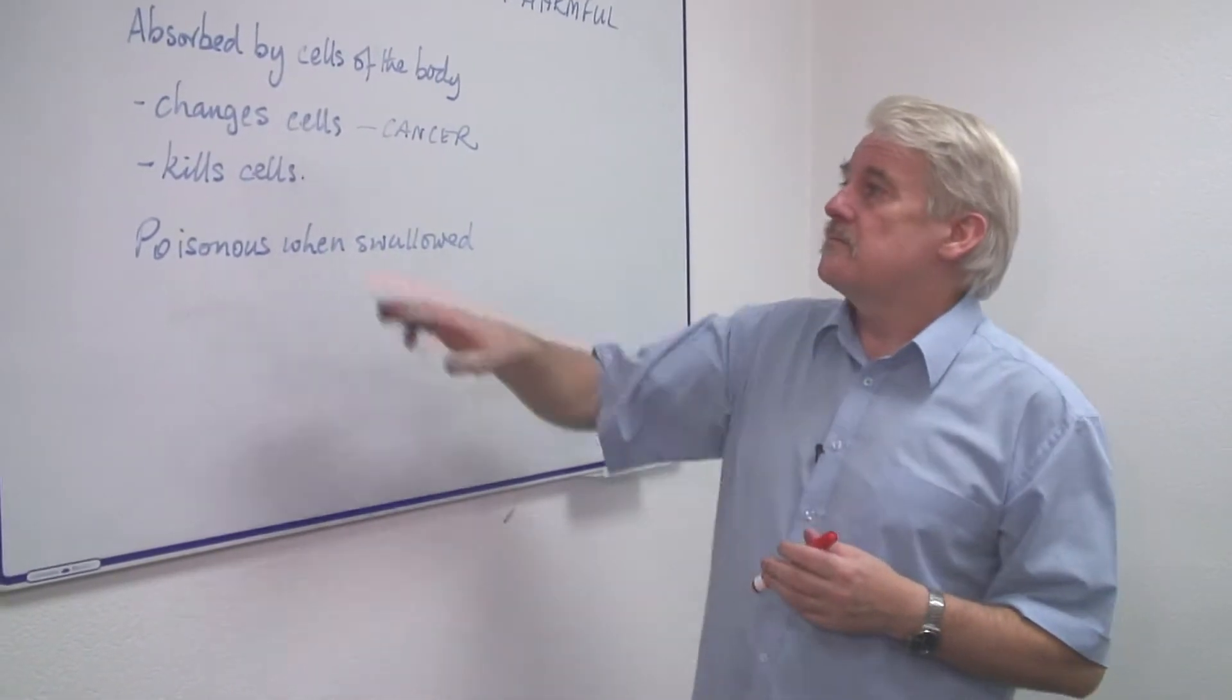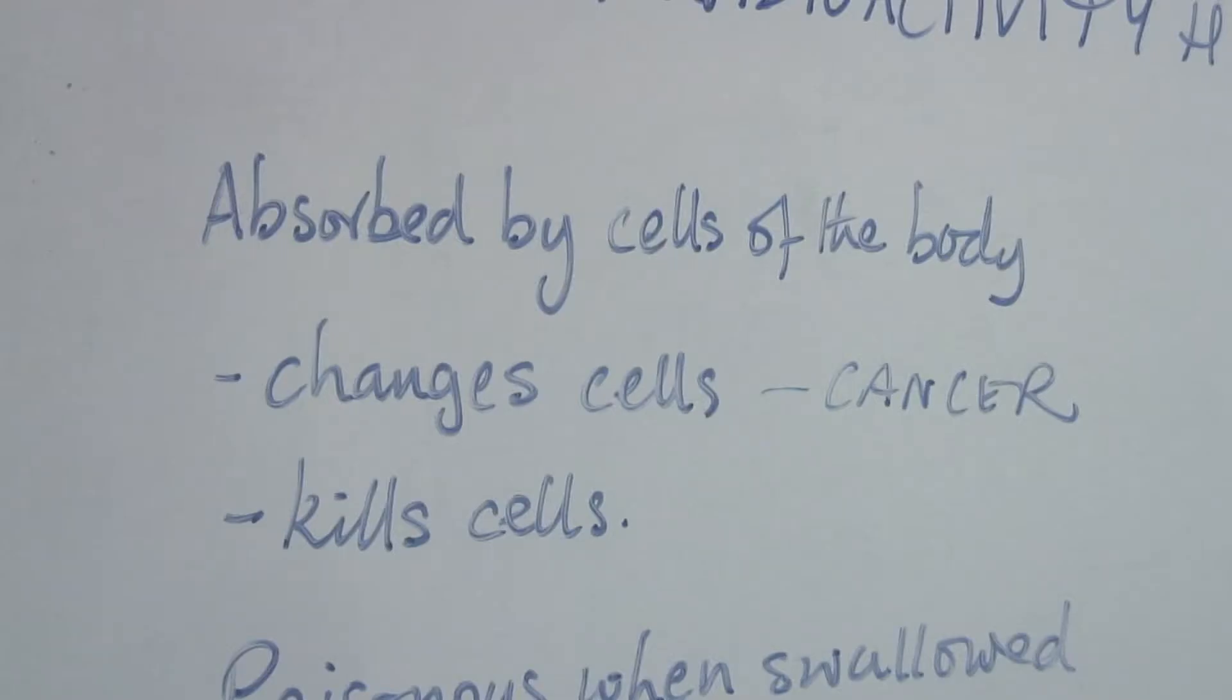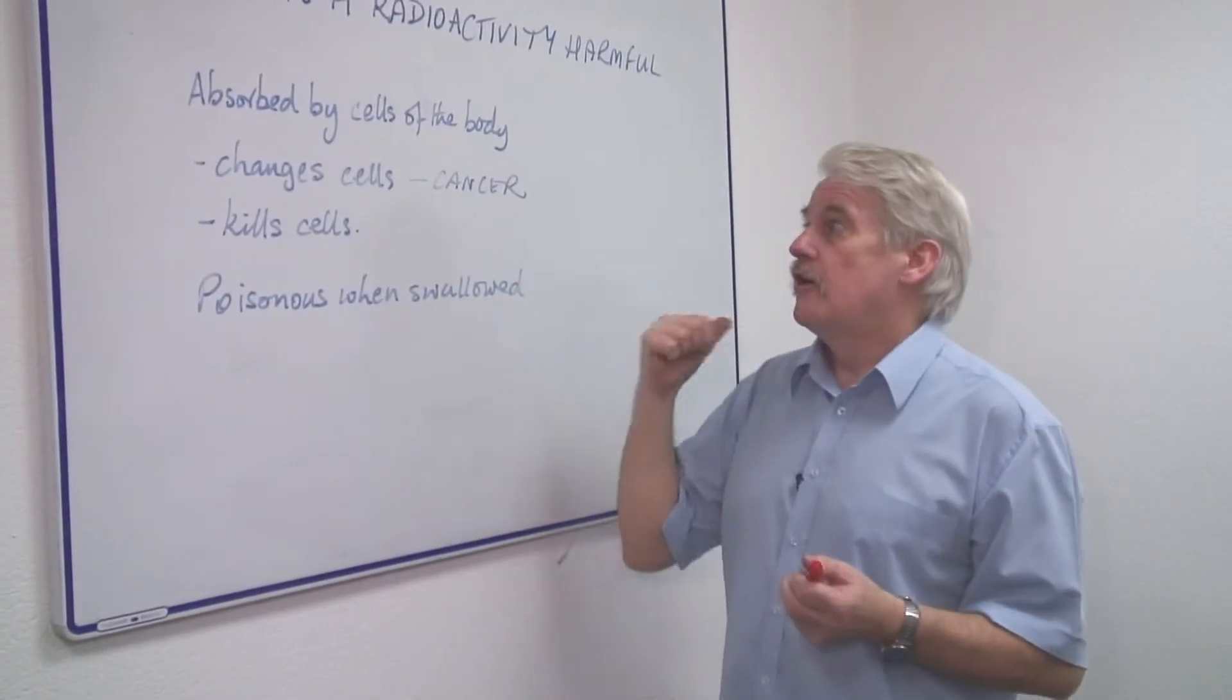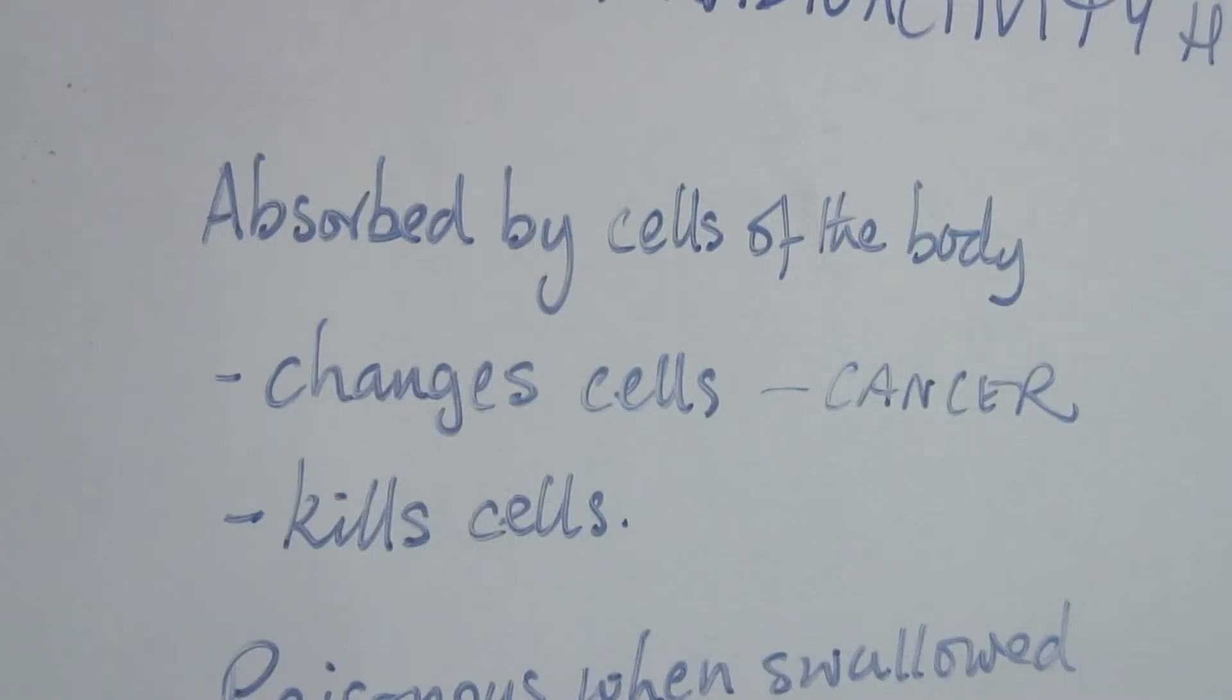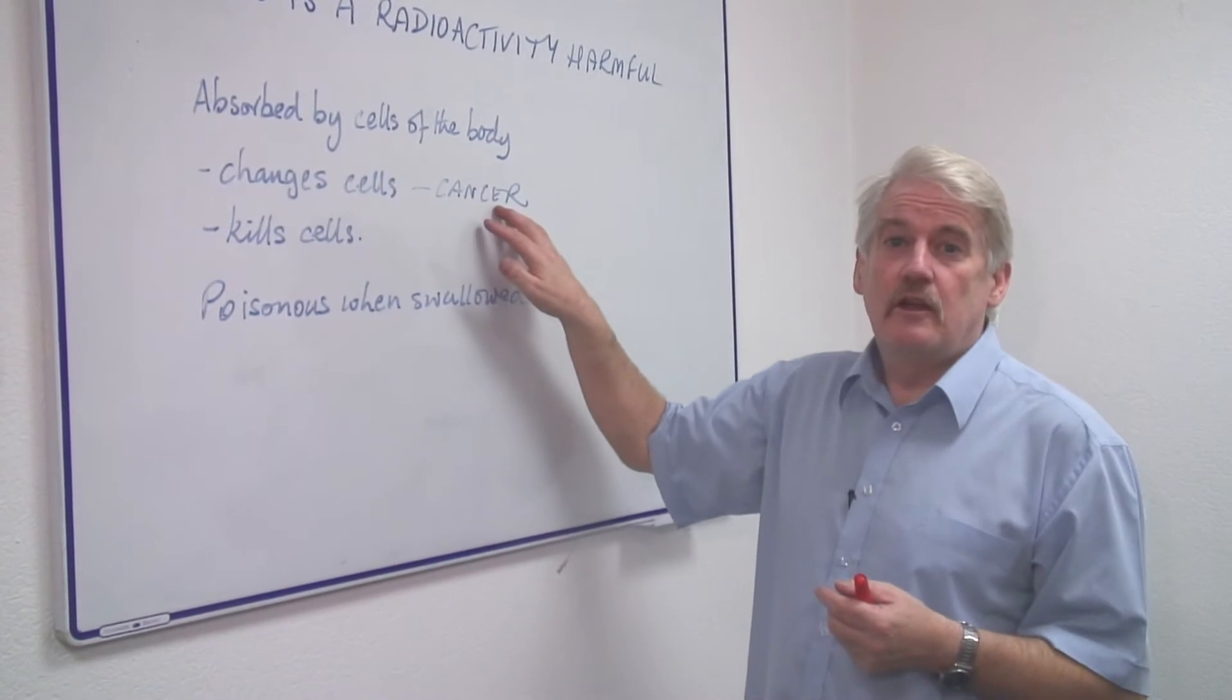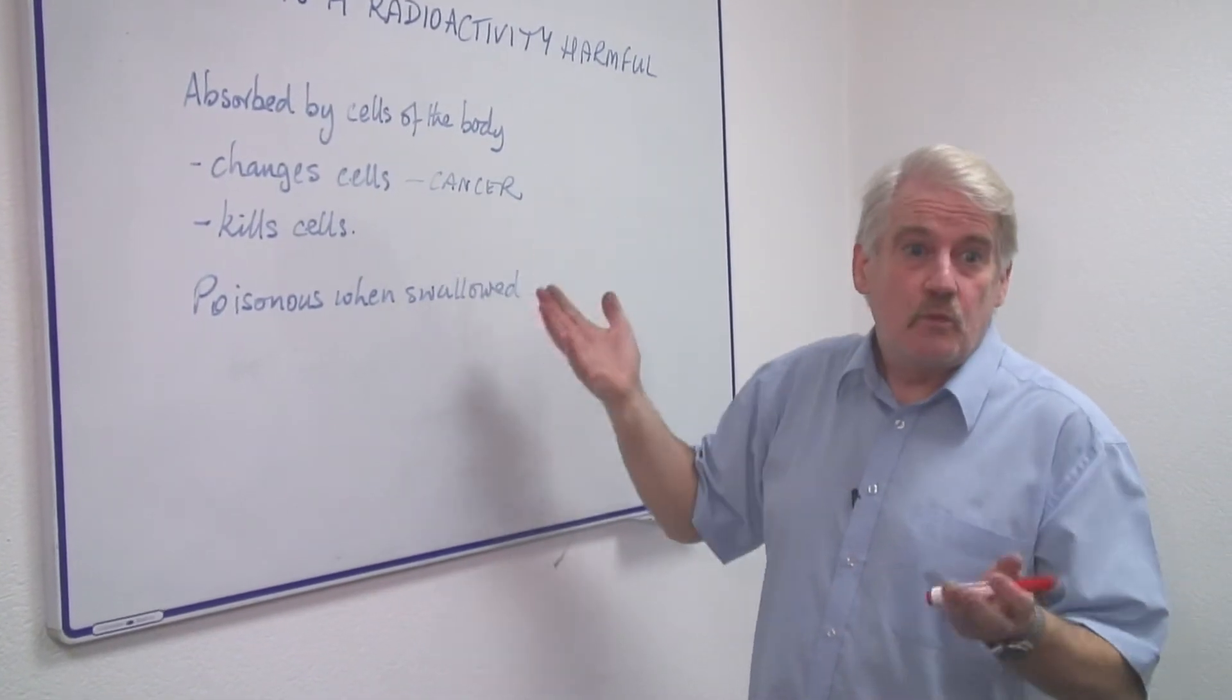One of the problems is that radiation is absorbed by the cells of the body and this can have two effects. The first one is the cell can actually change in its structure and it can become aggressive and form cancers which can damage the working of the body.